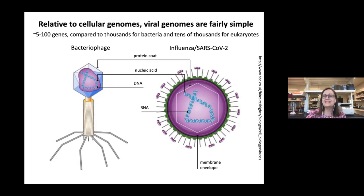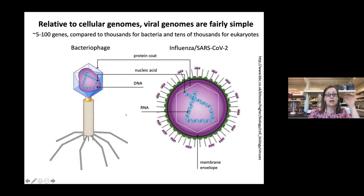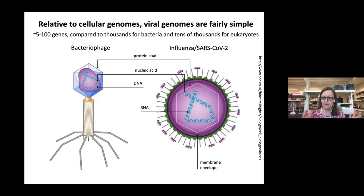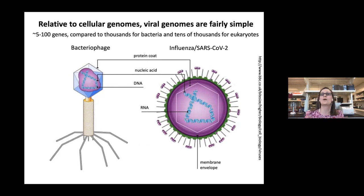Something that makes viruses different is that they have tiny, relatively simple genomes. Just to give a ballpark: viruses generally have on the order of 5 to 100 genes, though there's a wide range. Most bacteria have thousands of genes and most eukaryotes like us have tens of thousands of genes. That gives you a feel for the complexity of what these organisms are able to do, since genes encode the functions they can potentially carry out.